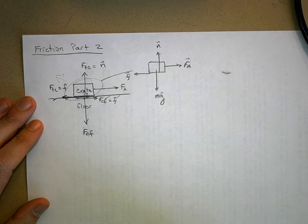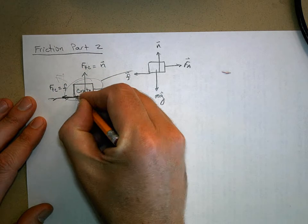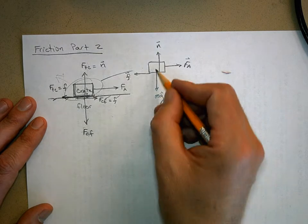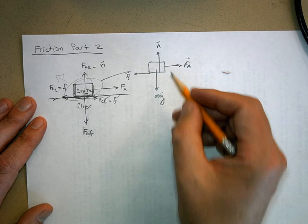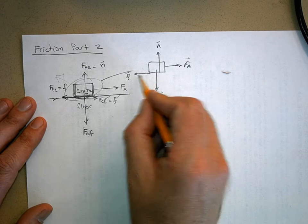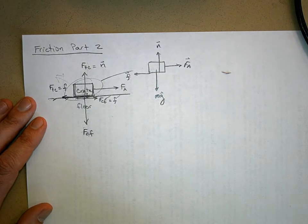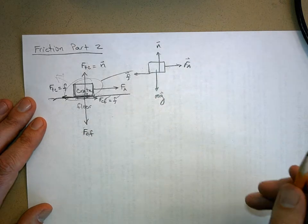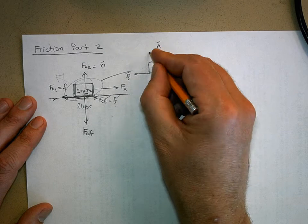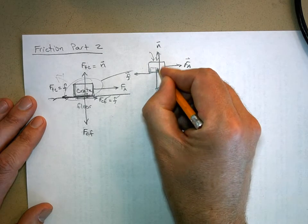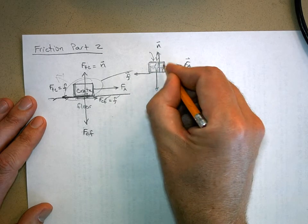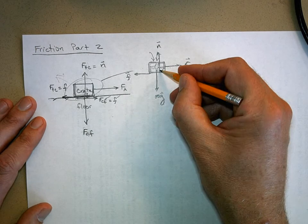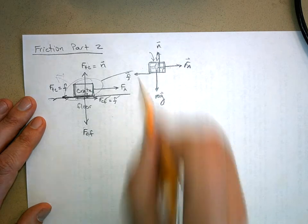Now, here's an empty crate. If it's empty, it doesn't have much mass, and therefore it doesn't have much weight. Therefore there's not a whole lot of normal force, and therefore not a whole lot of friction. So if I apply this applied force, this thing's really going to go. But what if I fill this crate with lead bricks? Now all of a sudden the weight is much greater, the normal force is much greater, and the friction force will be much greater.